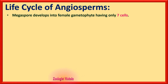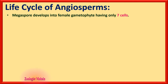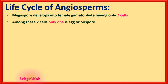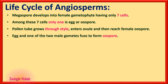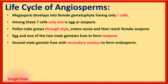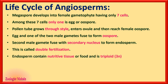The megaspore develops into female gametes having only seven cells — those seven cells are important to remember. Among these seven cells, only one is the egg or oosphere. The pollen tube grows through the style, enters the ovule, and reaches the female oosphere. One of the two male gametes fuses with the egg to form the zygote, while the second male gamete fuses with the secondary nucleus — which is a diploid nucleus — to form the endosperm. This is called double fertilization. Endosperm contains nutritive tissues stored for the seedling and is triploid.